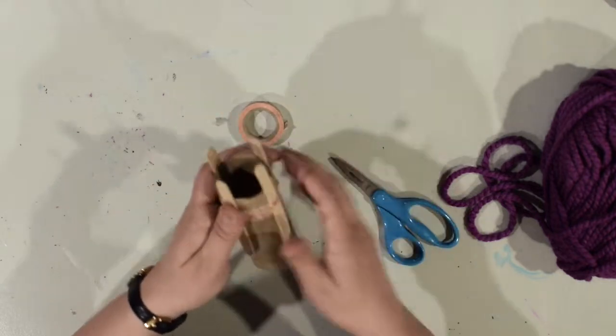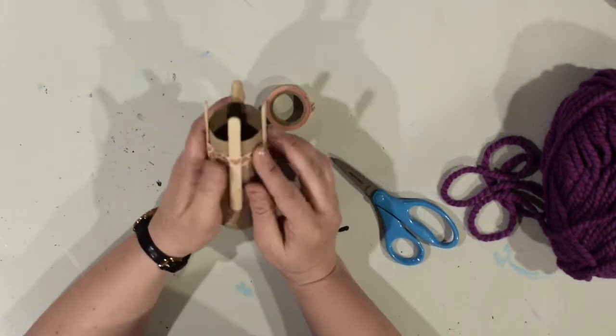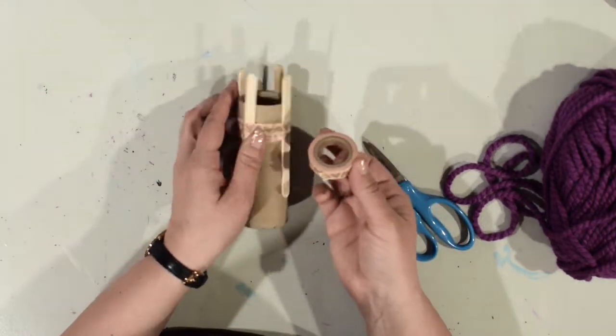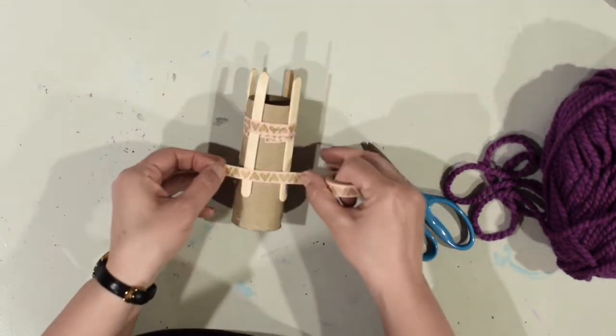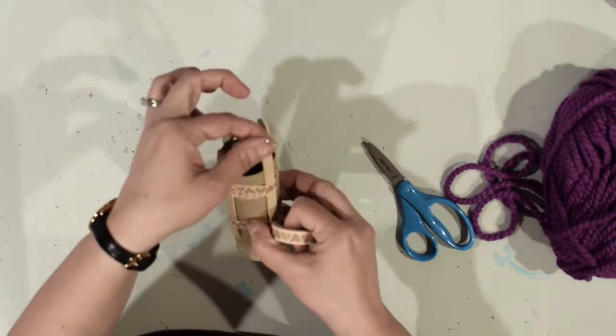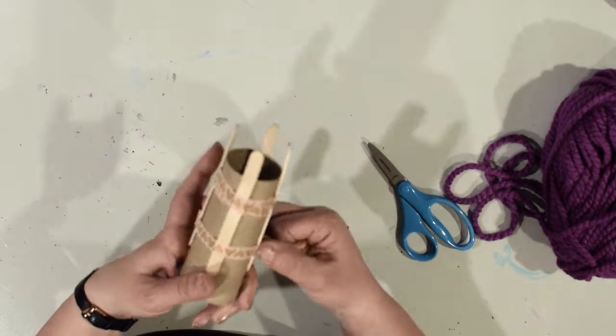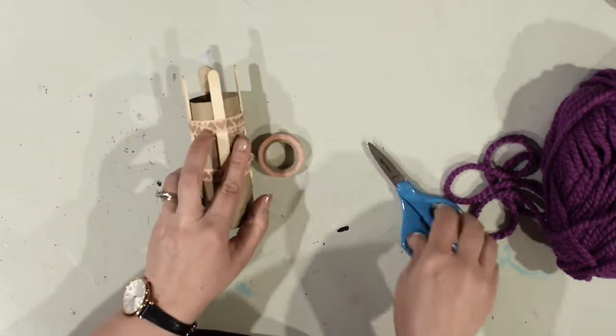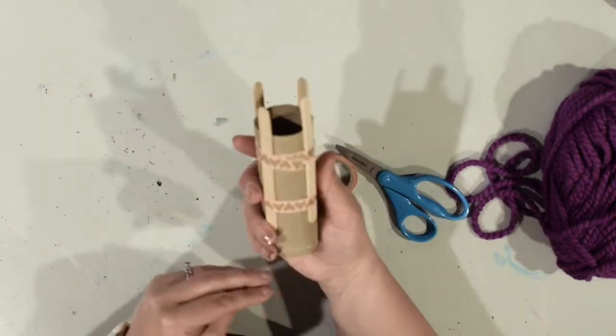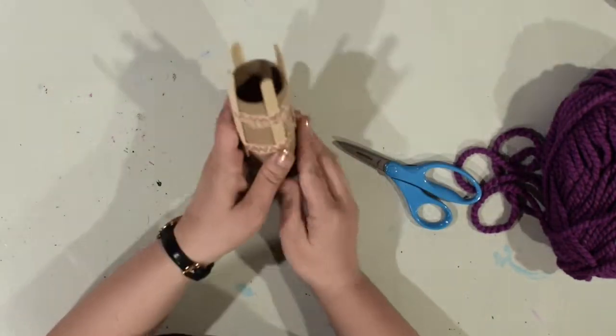If you're having trouble getting that by yourself, maybe ask a brother or sister or somebody at home to give you a hand holding those while you tape them. I also recommend putting some tape near the bottom. If you don't, sometimes your popsicle sticks will wiggle around on you as you are knitting. So this will help keep them secure like that.